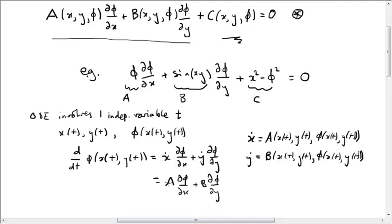And then, if phi is a solution of this equation star, this would be equal to minus C. That is to say, minus C evaluated at the point x of T, y of T, phi of x of T and y of T.